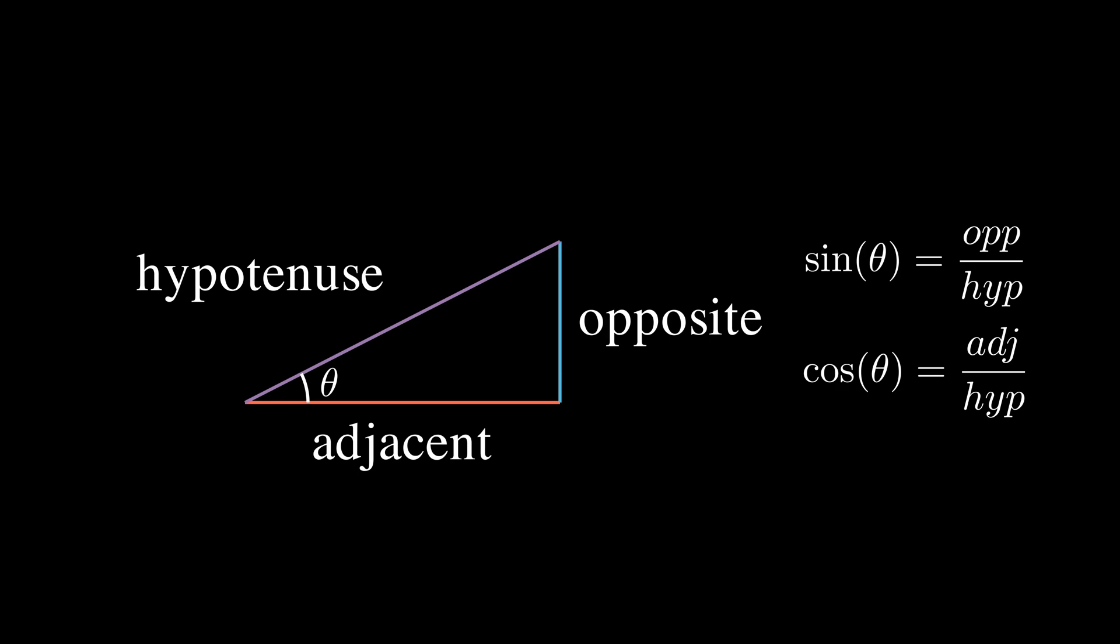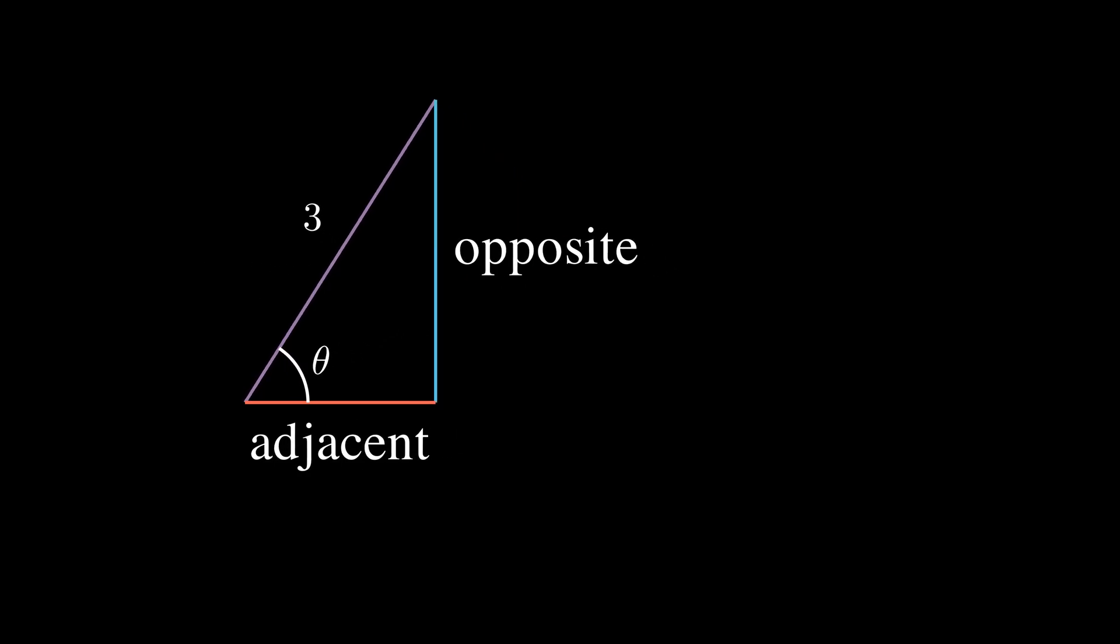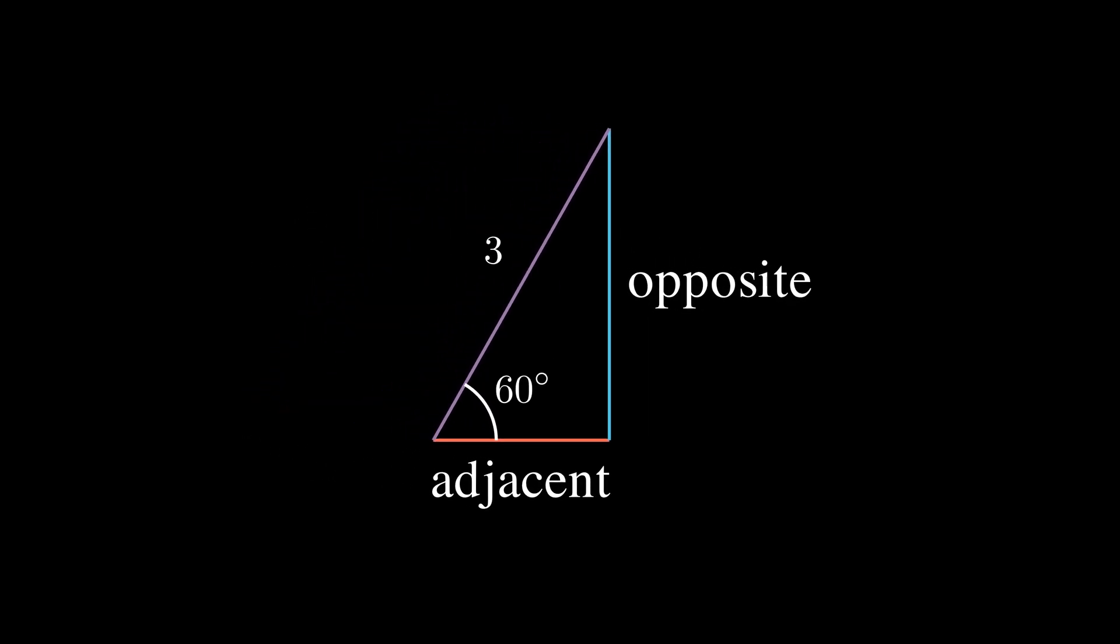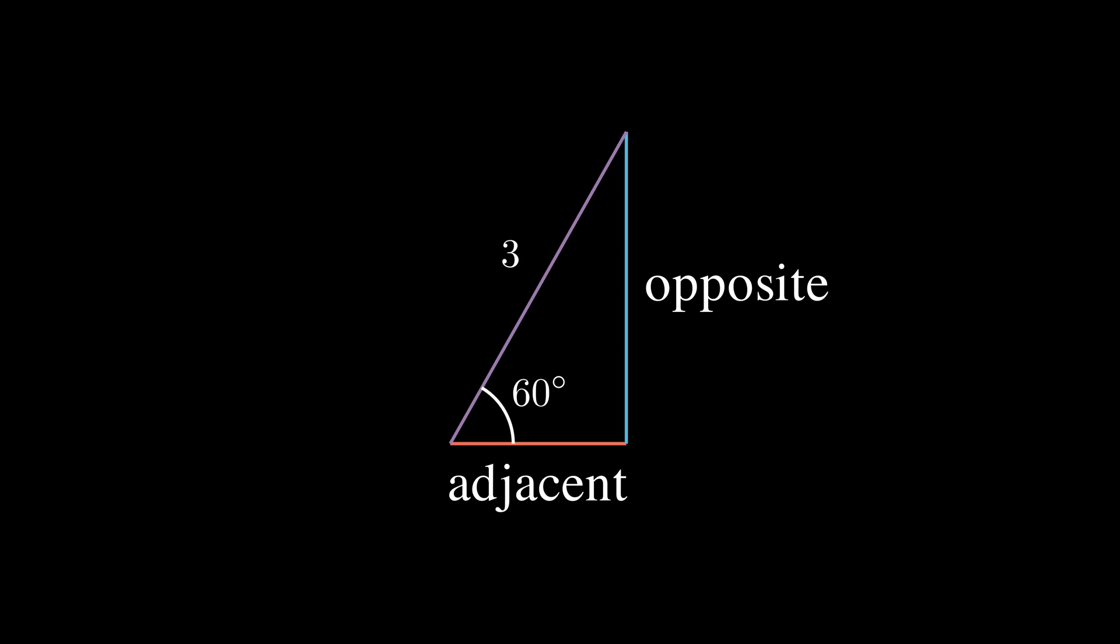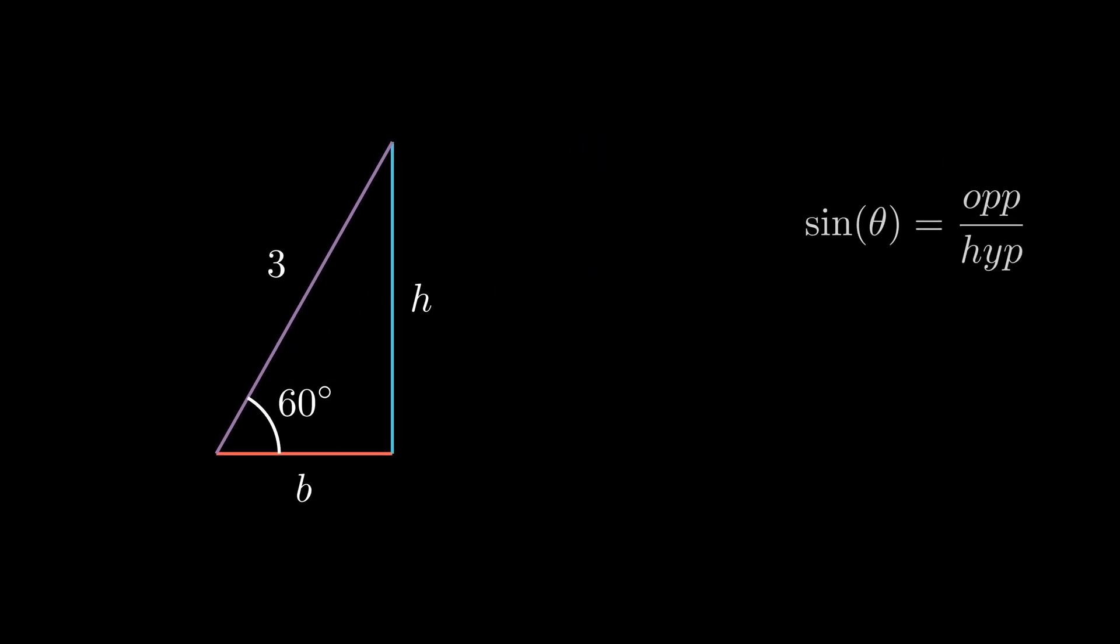So if you know that the hypotenuse of this right triangle is 3 and its angle θ is 60 degrees, then you can find the lengths of both of its remaining sides. Let's call the base b and the height h. Sine of θ concerns h, so you might write sin(60°) = h/3, and solving for h, h = 3 sin(60°). You can do the same thing for b: cos(60°) = b/3, and solving for b, b = 3 cos(60°).